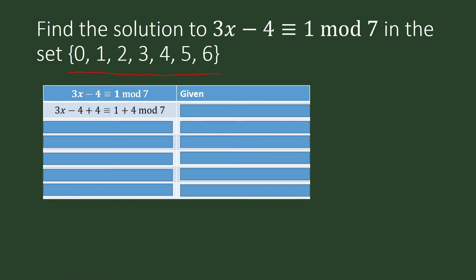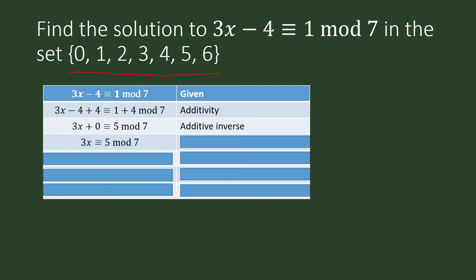We add 4. 4 is congruent to 4 modulo 7, so we can add 4 on both sides of our congruence equation. Our property for that is the property of additivity. 3x plus 0 is congruent to 5 modulo 7. Additive inverse. 3x is congruent to 5 modulo 7.